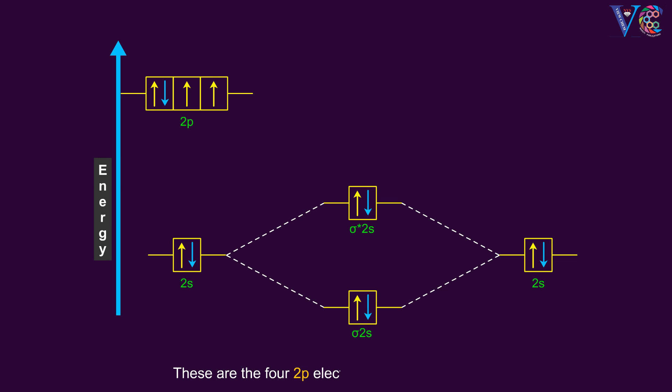These are the 4 2p electrons in one oxygen atom. 4 2p electrons in another oxygen atom.